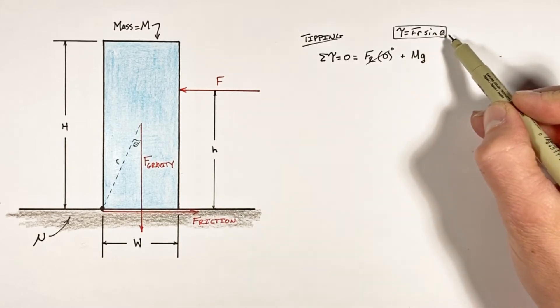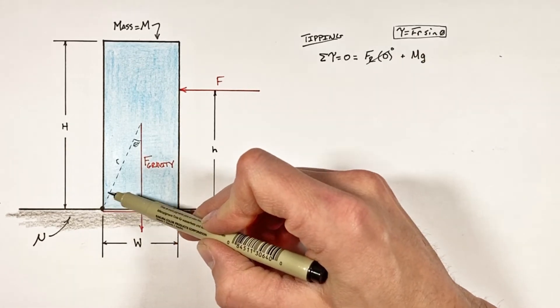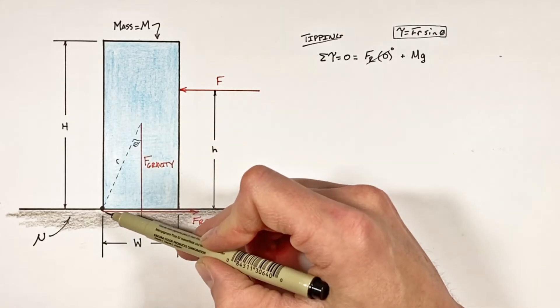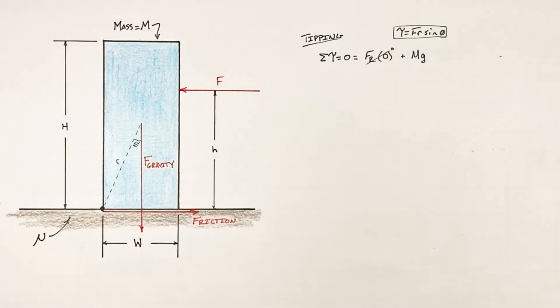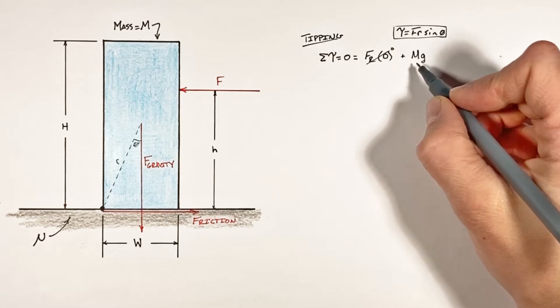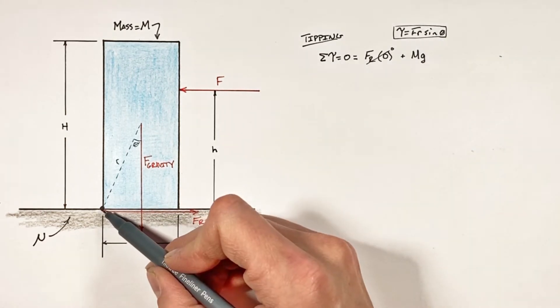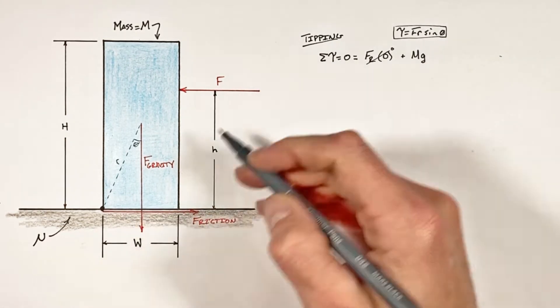So our torque by gravity is simply given by mg multiplied by this distance r·sin(θ), which is w over two.